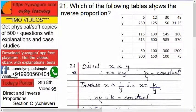Question 21: Which of the following tables shows the inverse proportion? See here, inverse proportion - both words should be there. So we have X and Y. This is table number 1, this is table number 2, this is table number 3.